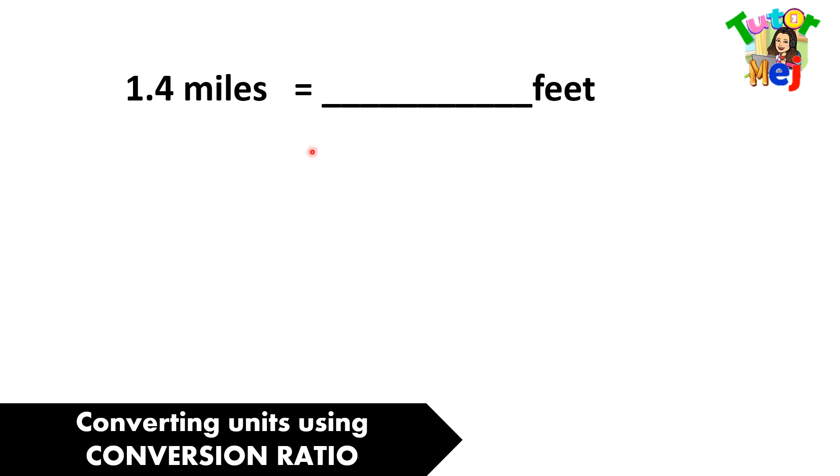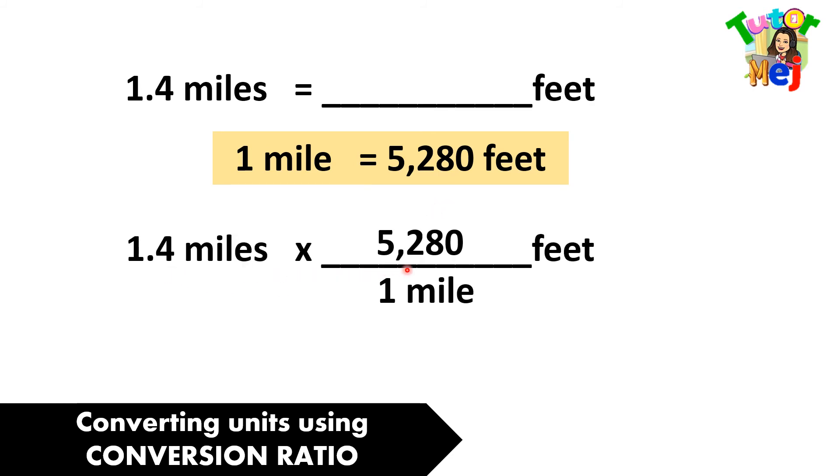Let us convert 1.4 miles to feet. We have the ratio: 1 mile equals 5,280 feet. Now, we multiply 1.4 miles times 5,280 feet over 1 mile.